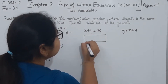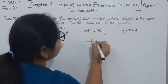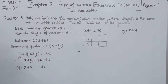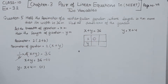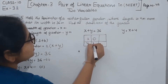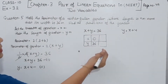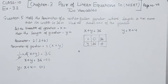Now we are going to find two values of equation 1 for drawing the graph. Taking x as equal to 0, we get y as equal to 36. And if we take y as equal to 0, we get x as equal to 36. So the two points for equation 1 are (0, 36) and (36, 0).